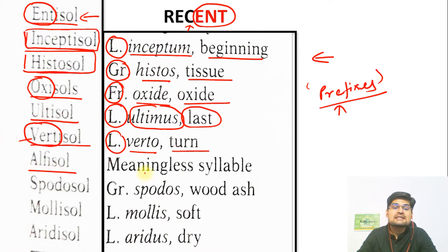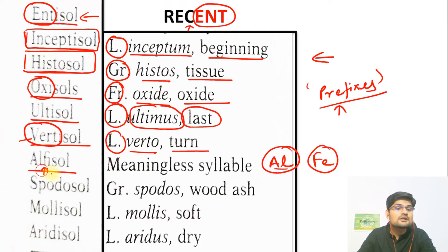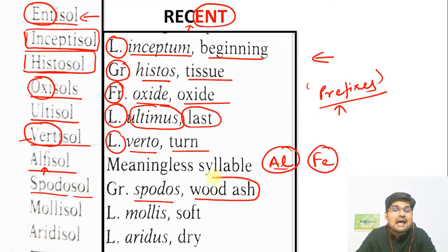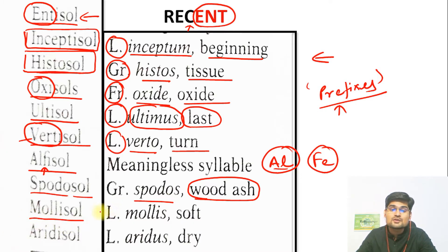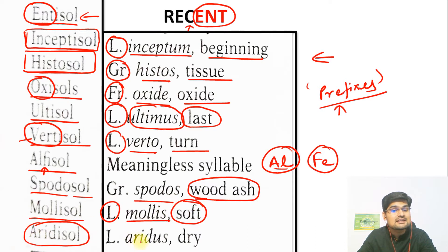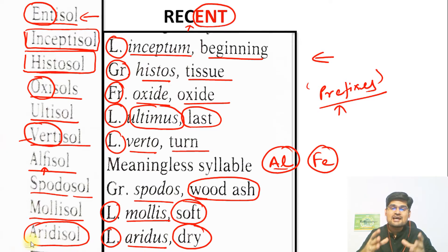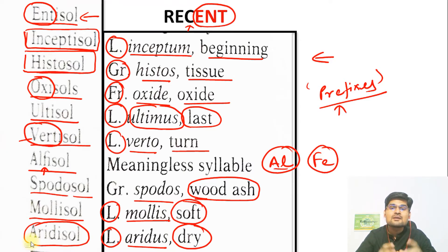Then we have Alfisol, coming from 'al' for aluminium and 'fe' for iron — so it is an aluminium- and iron-containing soil. Then Spodosol — the word 'spodos' means wood ash, so this is a soil containing wood ash, especially of volcanic origin. Then Mollisol, from the Latin 'mollis,' meaning soft soil. And Aridisol, from the Latin 'aridus,' meaning dry region soil. These are various kinds of soil classified on the basis of physical properties and this prefix system.